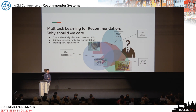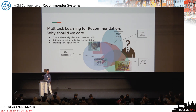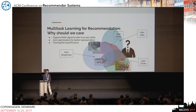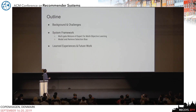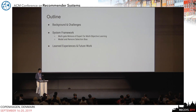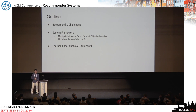By doing joint optimization of multiple tasks in a single deep neural network-based recommendation system, we hope to learn better representations and perform better on all tasks. This is also practical for training and serving efficiency, since we don't need to maintain multiple models. For the rest of this talk, I'll first cover backgrounds and challenges, then introduce two main pieces of our multi-task ranking system, and finally share some learnings and future work.